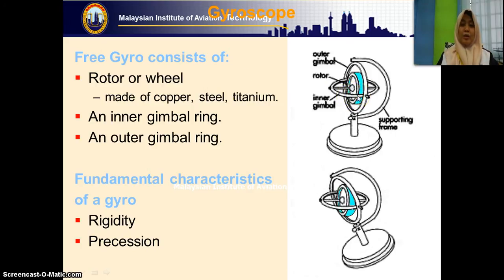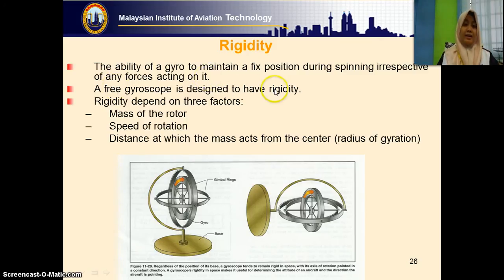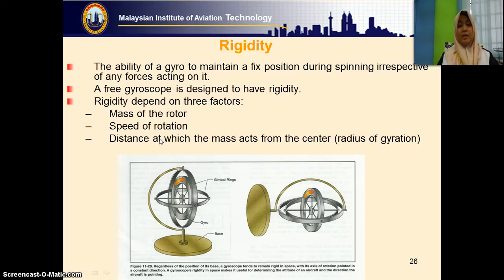You must know the characteristics or properties of the gyro. The gyro has two very important properties: rigidity and precession. Rigidity is the ability of a gyro to maintain a fixed position during spinning, irrespective of any forces acting on it. This rigidity depends on three factors: the mass of the rotor, the speed of the rotor, and the distance at which the mass acts from the center — what we call the radius of gyration.